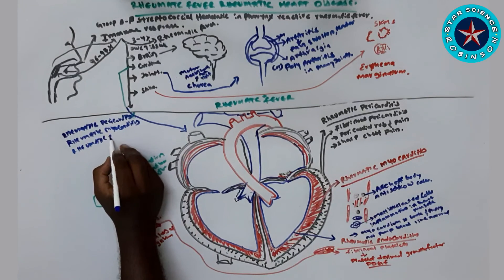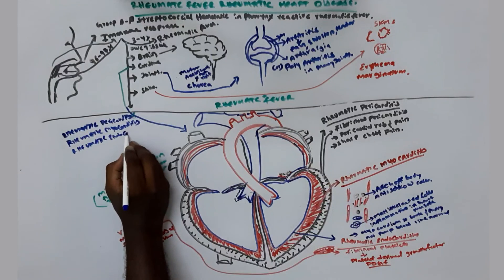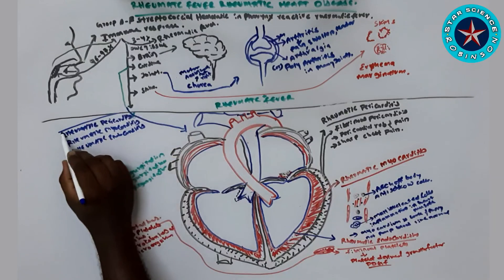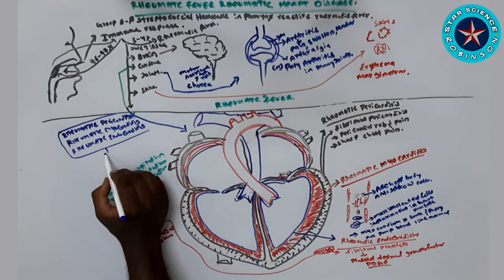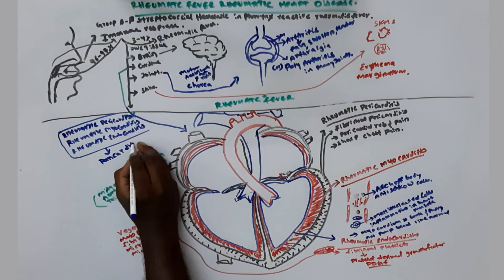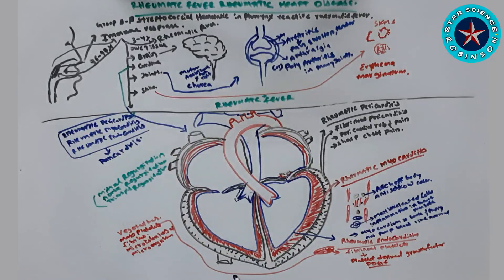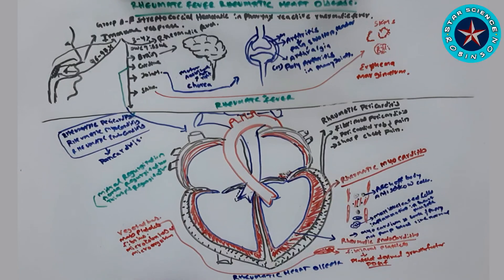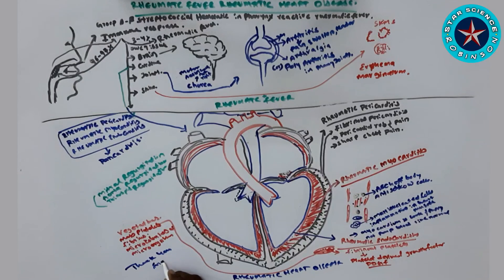Overall, rheumatic fever and rheumatic heart disease are caused by Group A beta-hemolytic streptococcal infection. When the immune response is inadequate and begins acting on its own tissue instead of fighting the infection, rheumatic fever develops. Thank you for watching this video on rheumatic fever and rheumatic heart disease — Star Science Robinson.